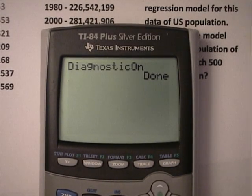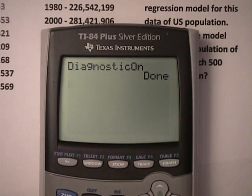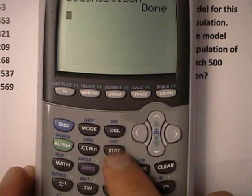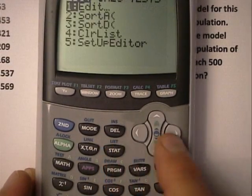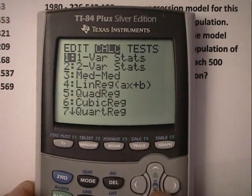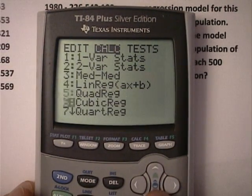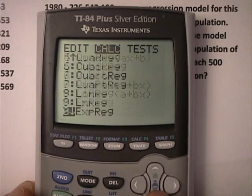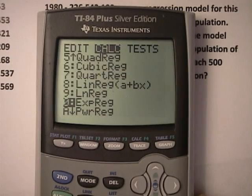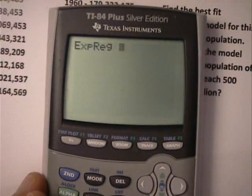What happens next? We need to actually do the regression. We're going to do the stat key, once again. And this time we're going to go over to calc, and we think it's exponential regression. We're going to do ExpReg, which stands for exponential regression. We're going to press enter.